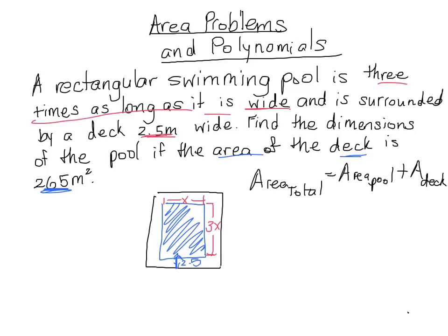So now we can go ahead and try to fill out some information that we have. We know the area of the deck, which is 265 meters squared. As far as the area of the pool is concerned, we know from our diagram that the length of the pool is 3x and the width of the pool is x, so the area of the pool is 3x times x, which gives us 3x squared.